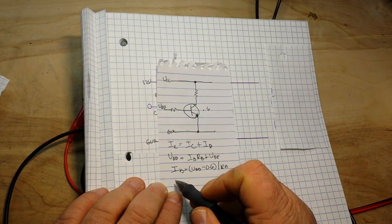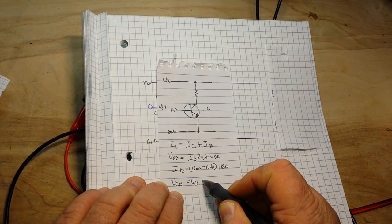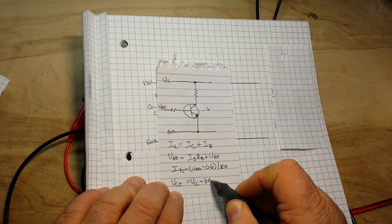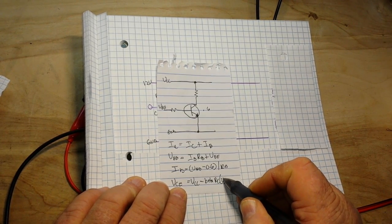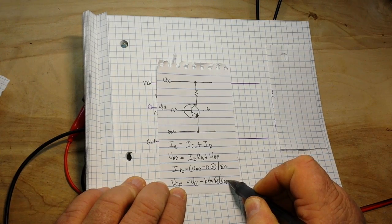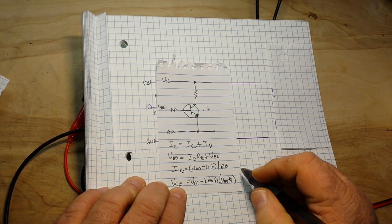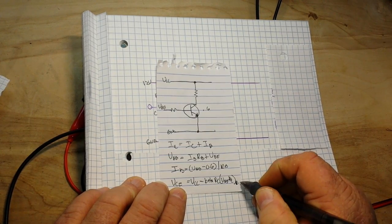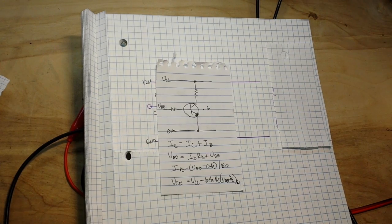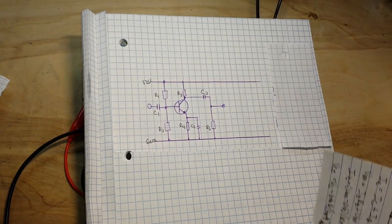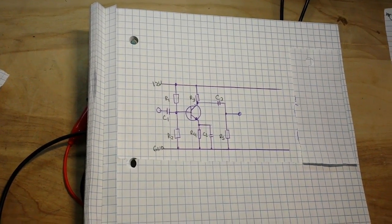And we can work it all out in the end and say that our VCE equals VCC minus the beta of RC times the product of VBB minus VBE divided by RB. Like I said, we're not going to get into all that, that's just a simple glossing over of the math involved. Now here is our amplifier circuit that we're going to look at today.